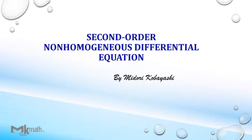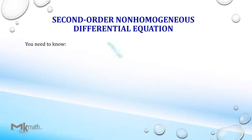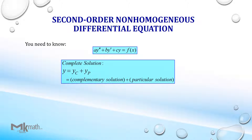In this video, I'd like to show an example of a second-order non-homogeneous differential equation. Before looking at the example, you need to know the solution formula for second-order differential equations: AY'' plus BY' plus CY equals F, as shown. Notice that there are two parts, Yc and Yp, in the complete solution.